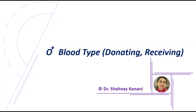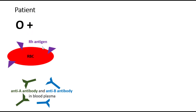In this video, I will explain donating and receiving O positive blood type. So let's say we have a patient who has O positive blood type. First of all, I look at the red blood cell of the patient. O simply means the patient does not have A antigen and does not have B antigen. But positive means the patient has Rh factor on the membrane of the red blood cells.